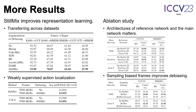Still Mix outperforms other methods on transferring action representations across datasets, and the learned representations improve the performance of weakly supervised action localization. Our ablation study illustrates the characteristics of Still Mix: debiasing works best when the reference network and the main network share the same architecture, and sampling biased frames improves debiasing compared to random sampling.